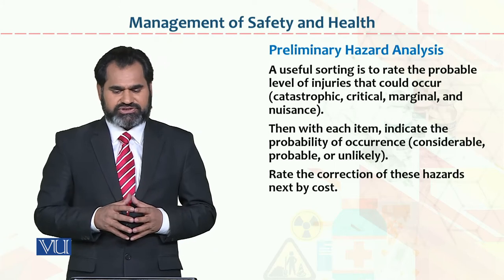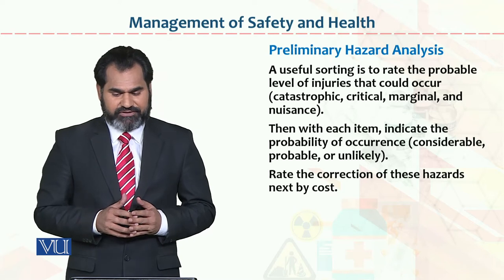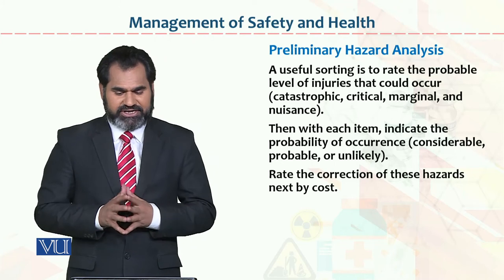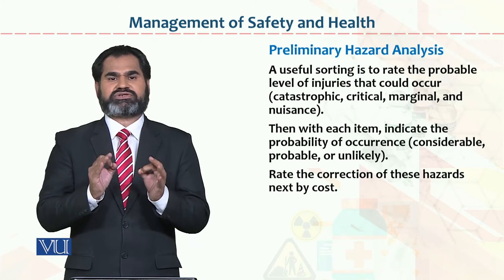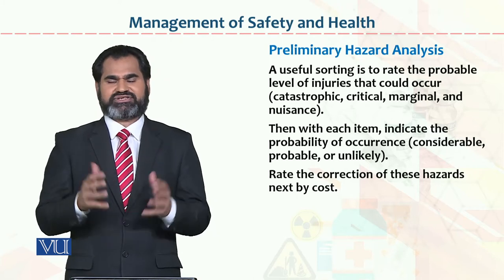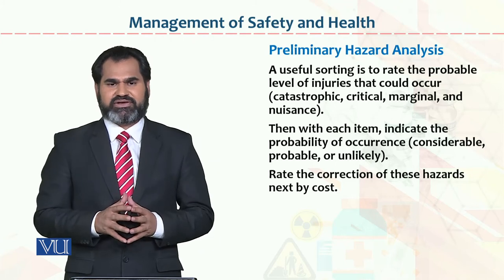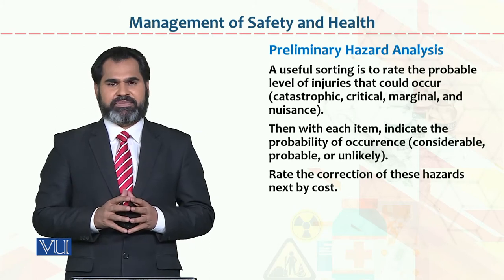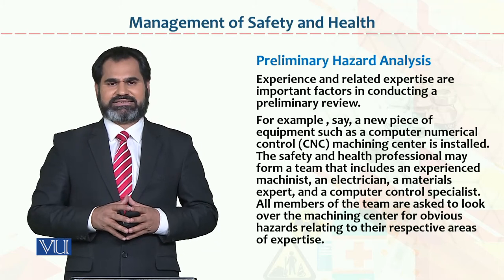A useful sorting method is to rate the probable level of injuries that could occur: catastrophic, critical, marginal, and negligible. Then, with each item, indicate the probability of occurrence. This means identifying how many chances there are that any activity can occur, so that appropriate precautionary measures are taken — for example, to prevent fire or other hazard events.